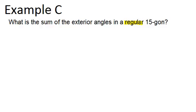So again, it's talking about regular and 15-gon. So that just means it has 15 sides. All the exterior angles are the same measure. But the question actually asked for the sum of the exterior angles. And you have to remember, well, the sum of the exterior angles is always 360 degrees.